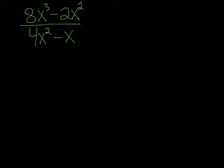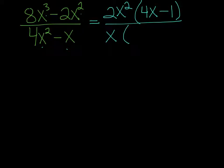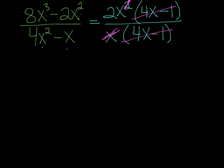Simplify 8x cubed minus 2x squared all over 4x squared minus x. First, factor the top: the GCF is 2x squared, giving 2x squared times 4x minus 1. On the bottom, factor out x: x times 4x minus 1. Now the groups 4x minus 1 cancel, and x squared over x reduces — one x cancels. All that's left is 2x on top, so the answer equals 2x.